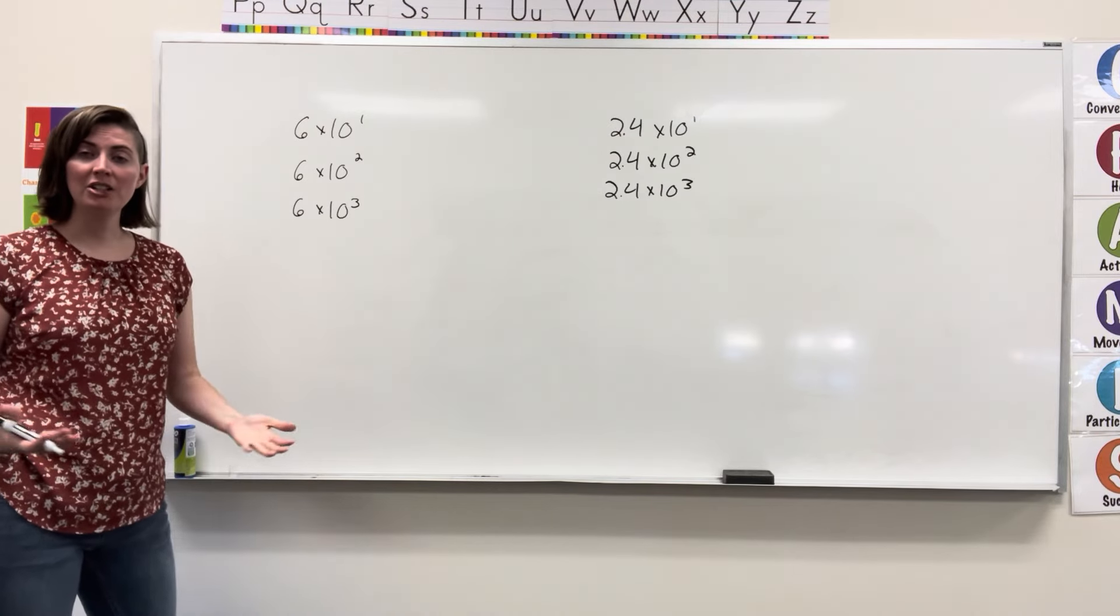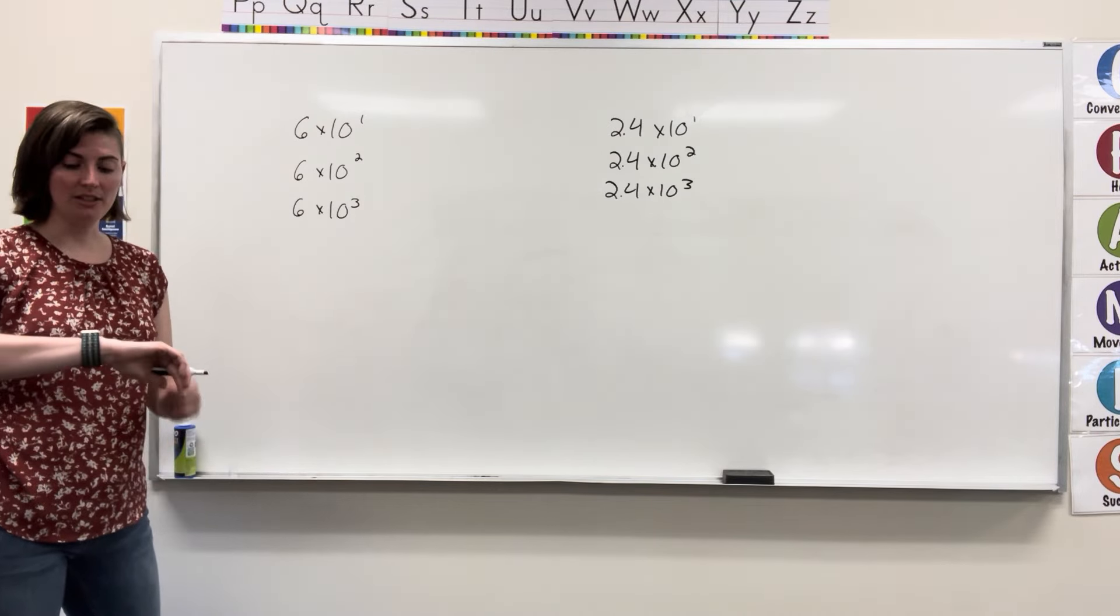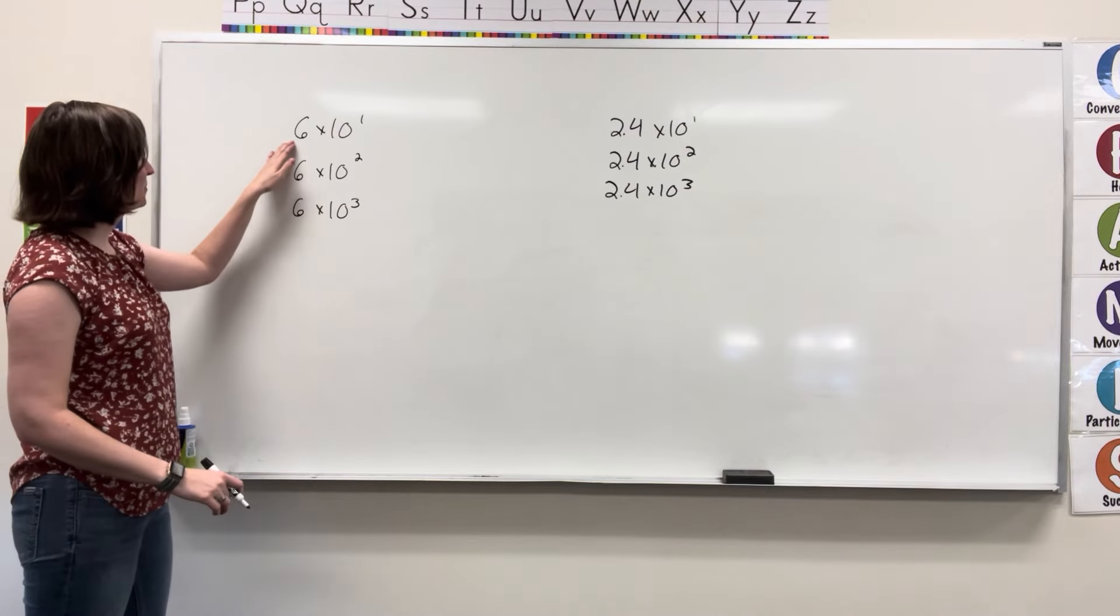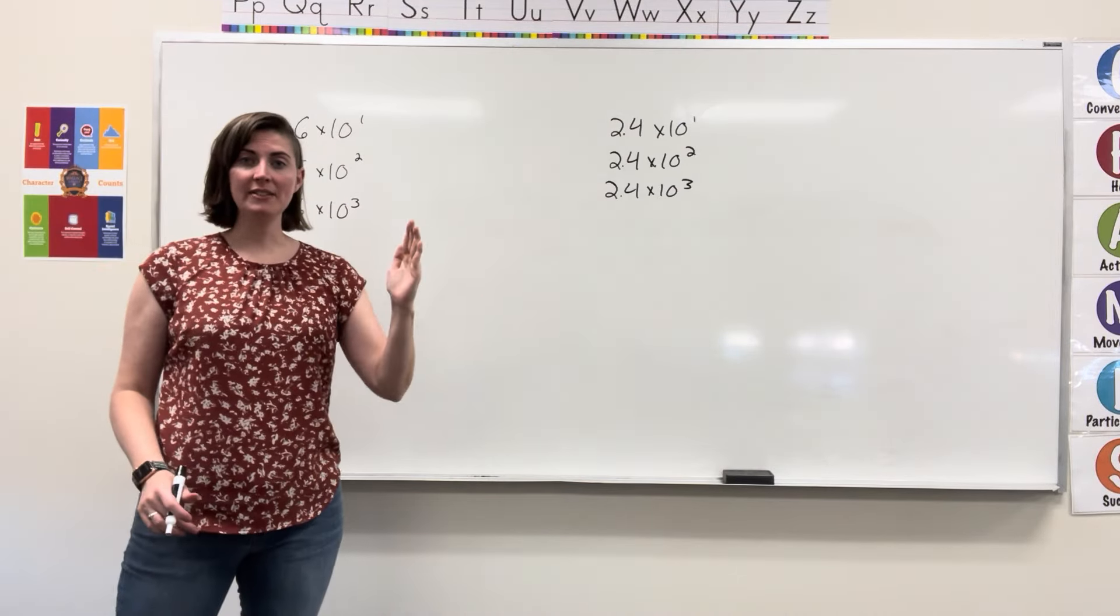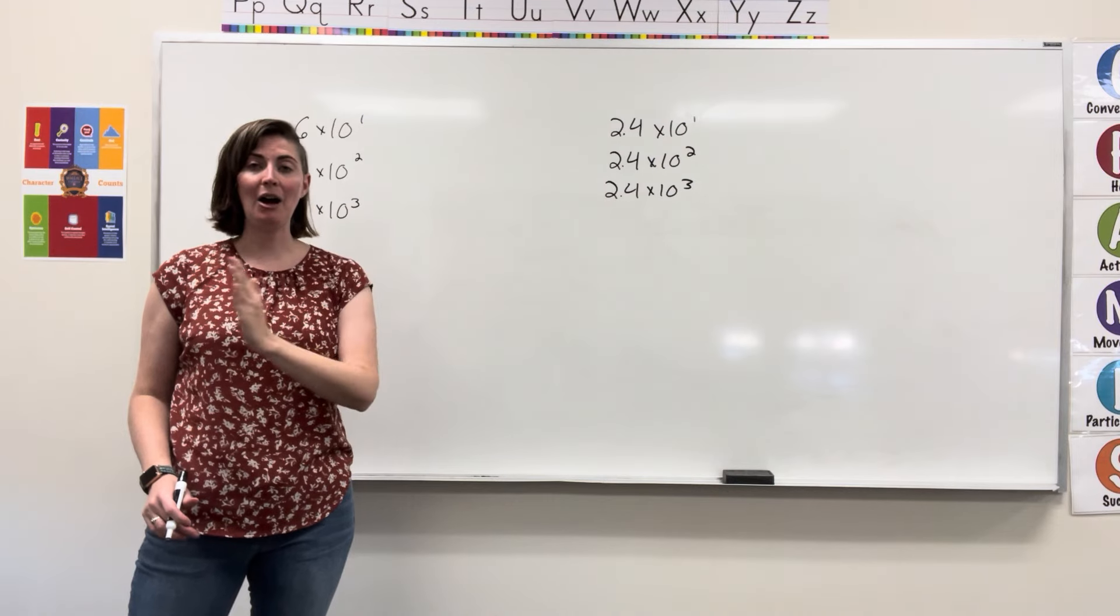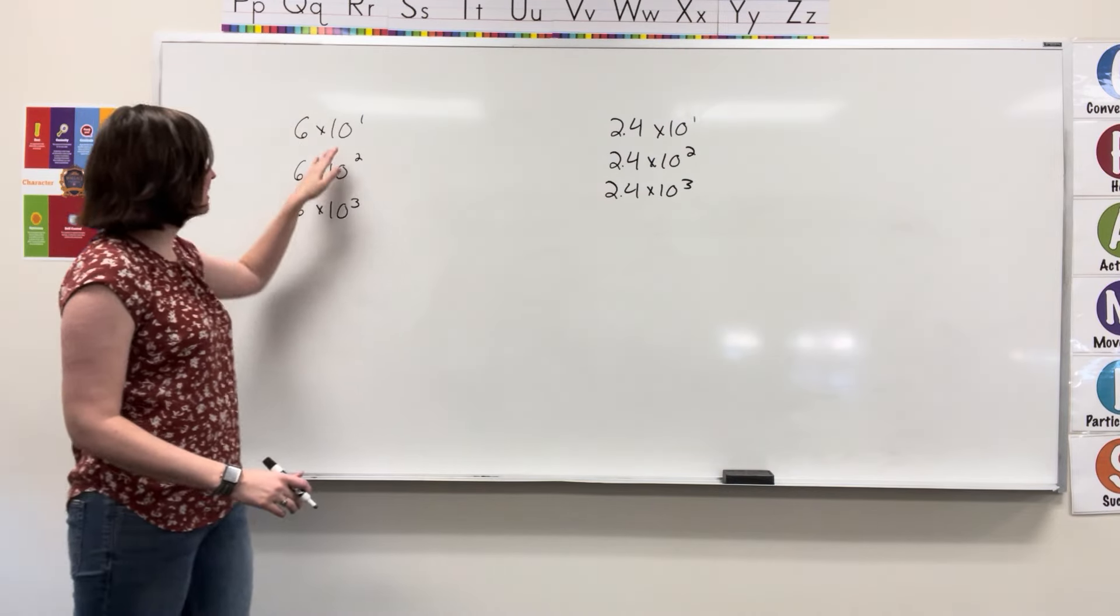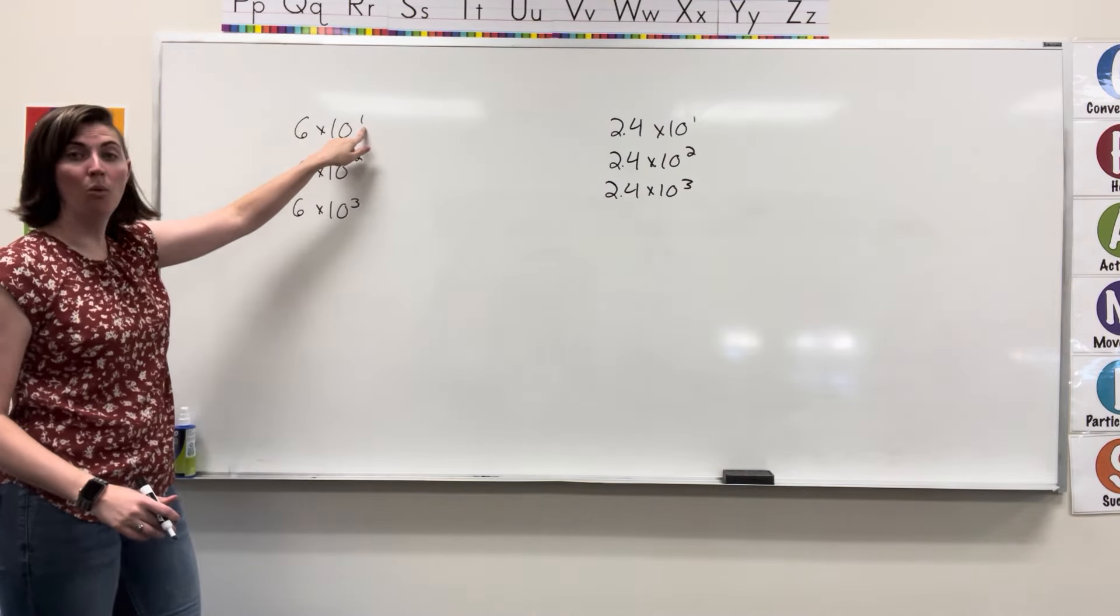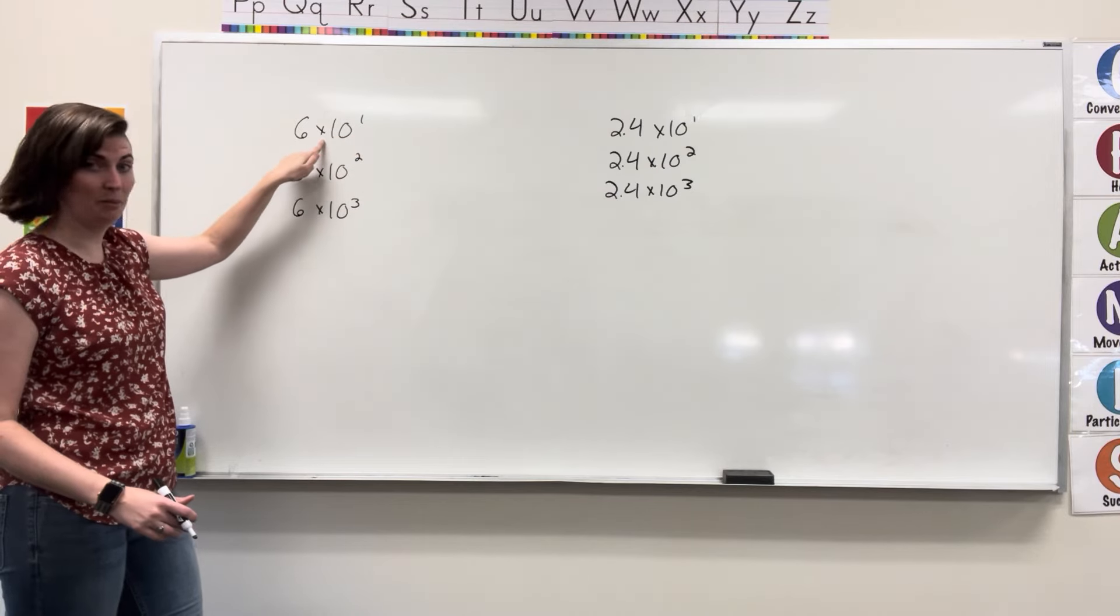Now, these are just shorthand notations that make it quicker and easier for us to solve problems. So, this 10, I know that each place value move is by a power of 10. So this is telling me that I'm actually going to move one place value forward because I'm multiplying.